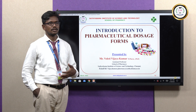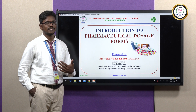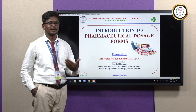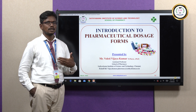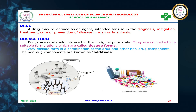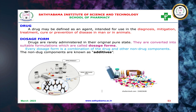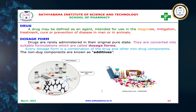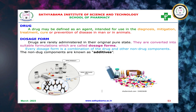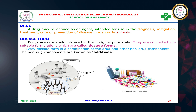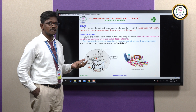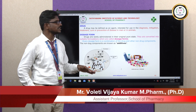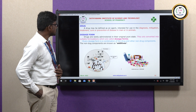Before going into detail, the pharmacy field is an important area where we prepare the medicine, dispense the medicine, and market the medicine. First, let me start with the definition of a drug. A drug may be defined as an agent intended for use in the diagnosis, mitigation, treatment, cure or prevention of diseases in human beings. In the case of animals, the dosage forms used are referred to as veterinary dosage forms.